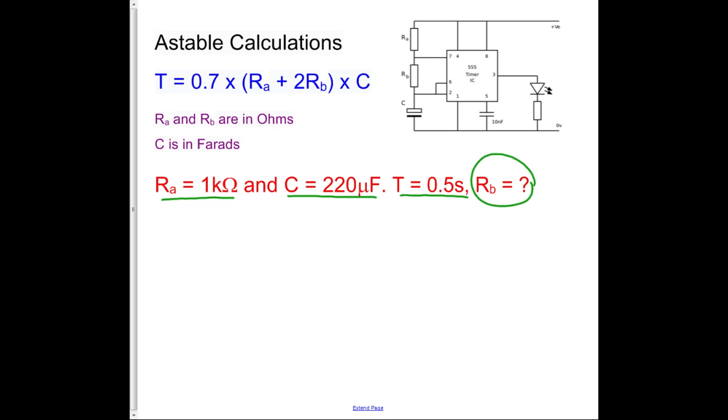I'm actually going to approach it in a slightly different way. I'm going to write T equals 0.7 multiplied by, it's 1,000, just for now, I'm going to write 1,000, plus 2RB multiplied by C, which is 220 times 10 to the minus 6. So I've actually put the values in to start with.